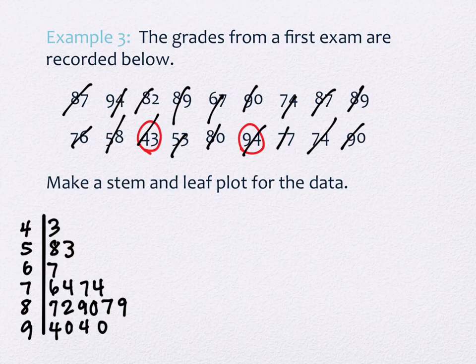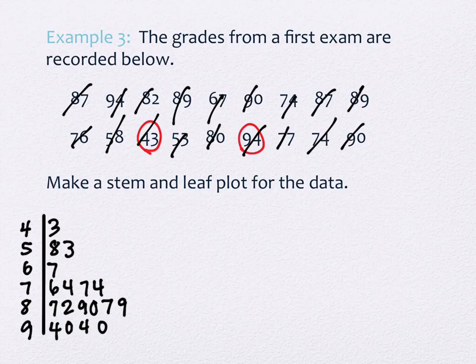The stem and leaf plot is supposed to have organization. Right now we've put them in stacks — 40s, 50s, 60s, 70s, 80s, 90s — but now we want to put them in order from smallest to largest within each row. Not just divided by letter grade, but actually in complete order.